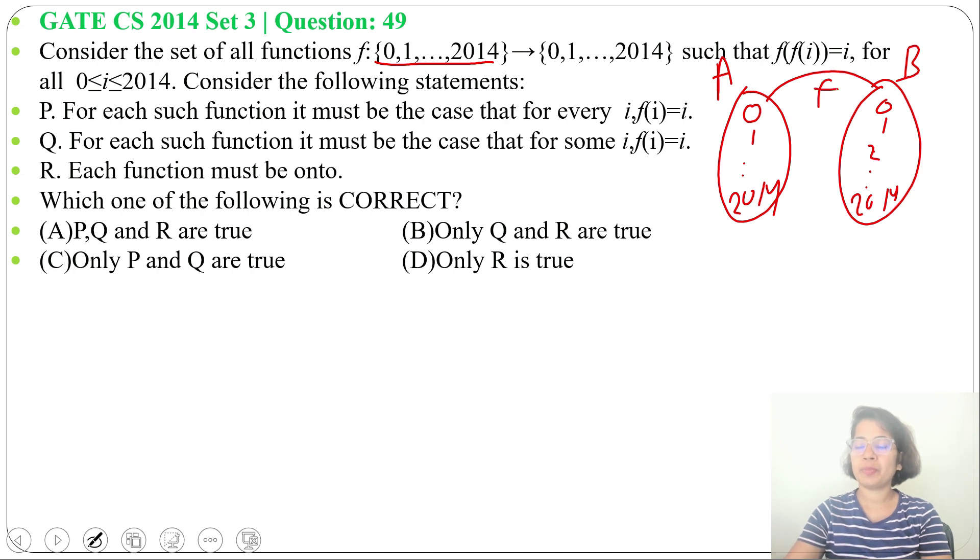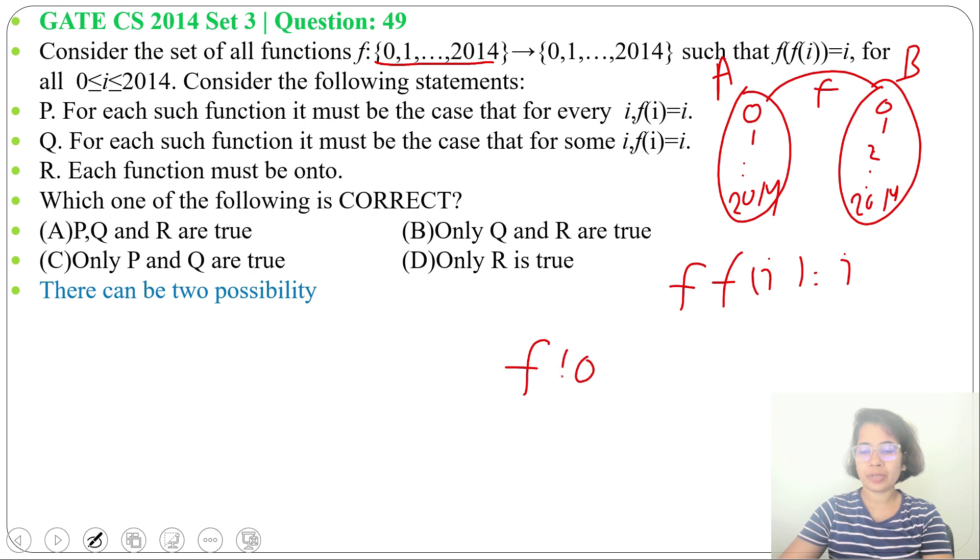So there can be two possibilities: first, f(i) can be j, then f(j) can be i, like f(0) can be 1 and f(1) can be 0.